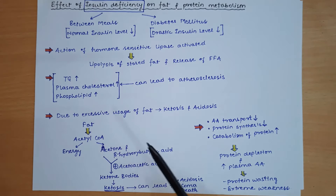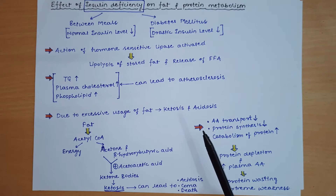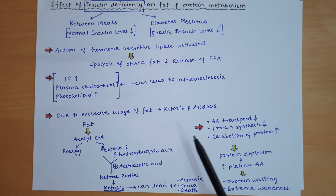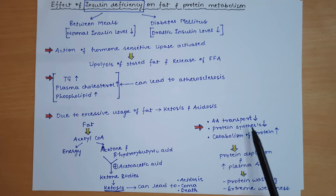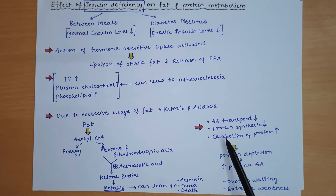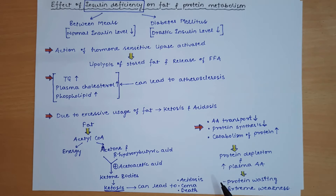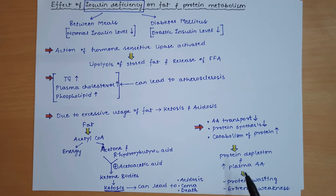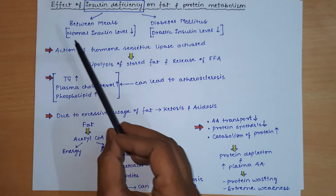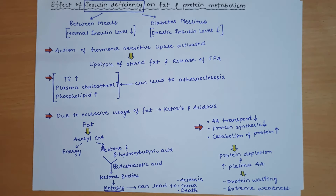Regarding the effect of insulin deficiency on protein metabolism: protein synthesis decreases because amino acid transport into cells is reduced, transcription and translation are impaired, and protein catabolism increases. This leads to protein depletion, increased plasma amino acid concentration, and clinically results in protein wasting, muscle wasting, and extreme weakness.